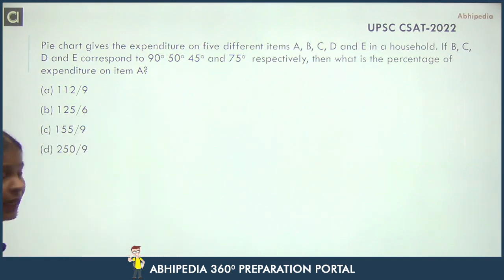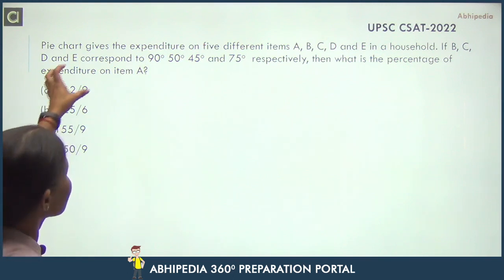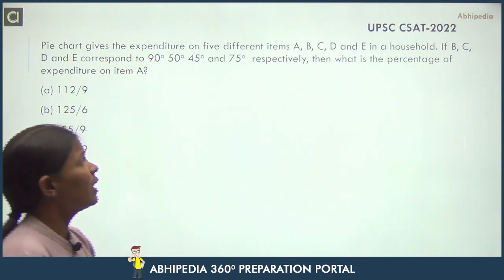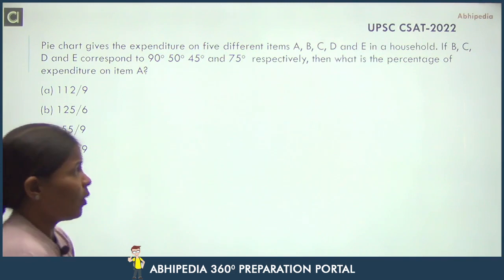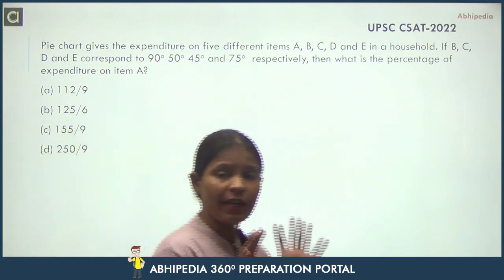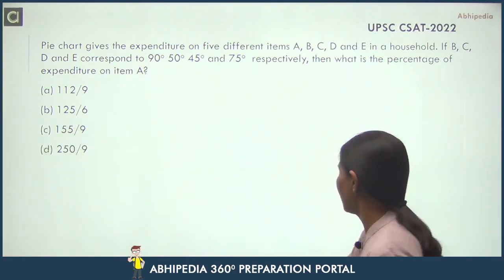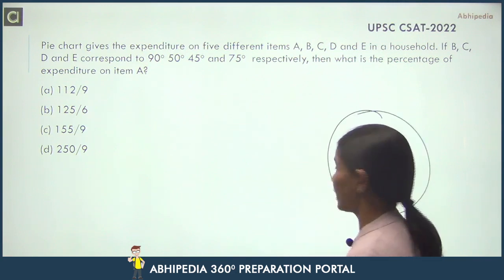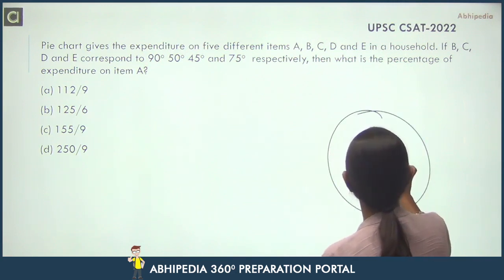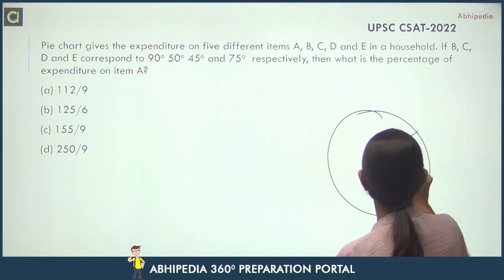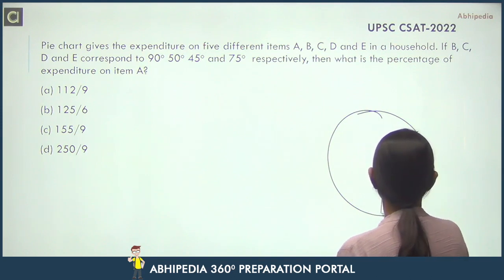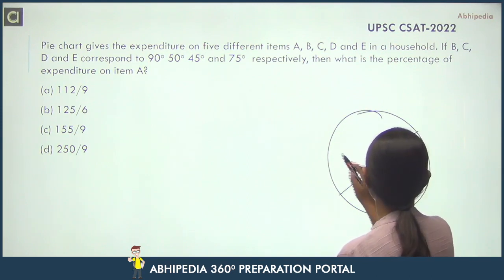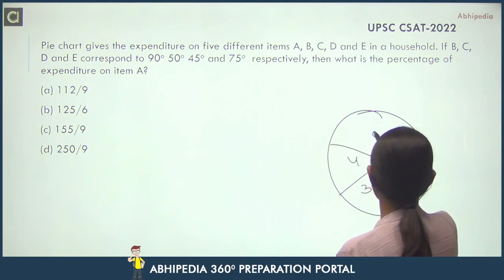Ab dekho the question hai: a pie chart gives the expenditure on 5 different items — A, B, C, D, E — in a household. Ab yaha pe 5 items hai aur woh pie chart ke ander hain. That means this complete circle is divided into 5 parts: 1, 2, 3, 4 and 5, labeled A, B, C, D and E.